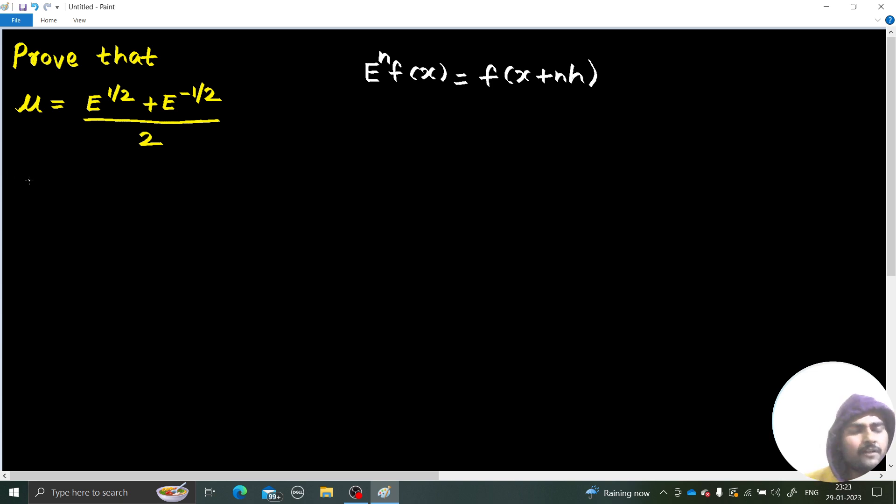And we will start off with a definition of averaging operator, which is simple. So if averaging operator is operating on fx, this is f of x plus h by 2 plus f of x minus h by 2, divided by 2.